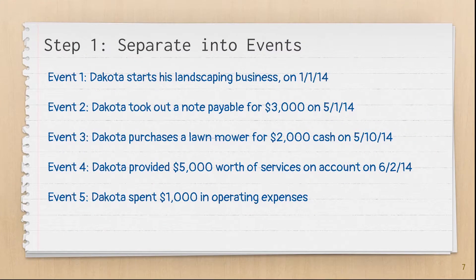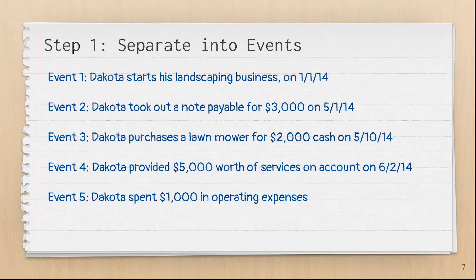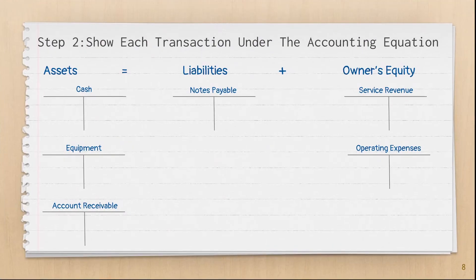The first step in solving a problem like this is to read through the information and separate it into distinct events. The next step is to set up your t-charts under the accounting equation. And remember, always show your work.